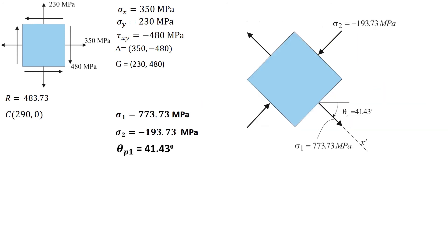From Mohr's circle, we managed to calculate the principal stresses sigma 1 and sigma 2. Also, we obtained theta p1, which is the orientation of the plane of maximum and minimum normal stresses. This plane is also called the principal plane, as shown in this figure. Note that no shear stress acts on the principal planes. I hope this tutorial was helpful. Best of luck!